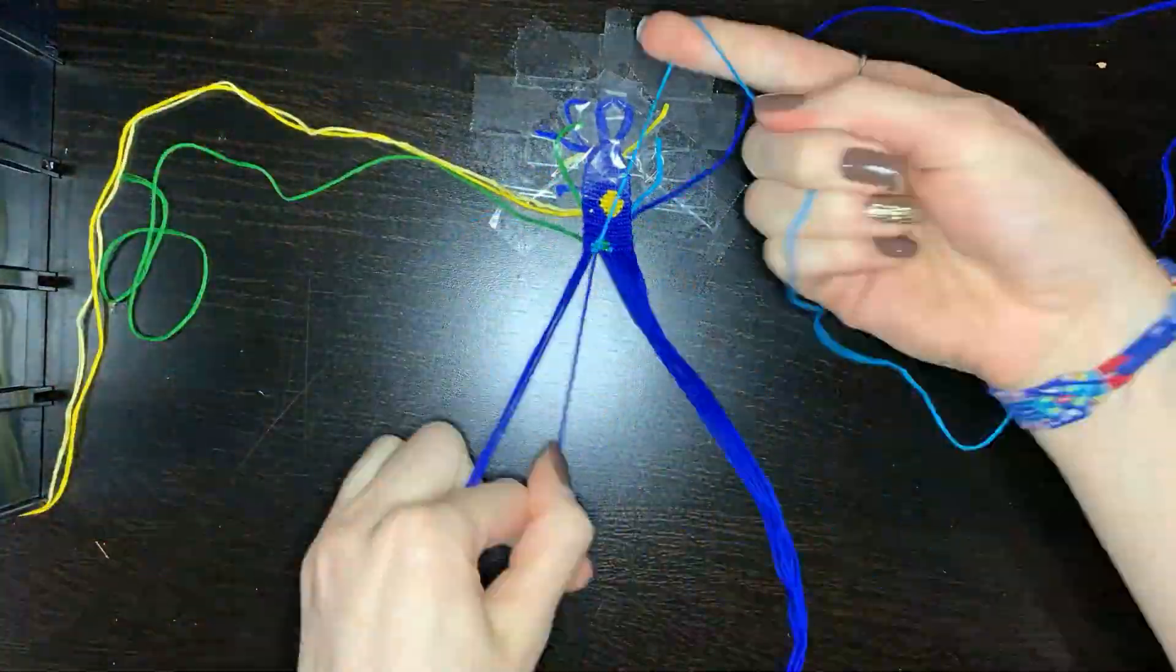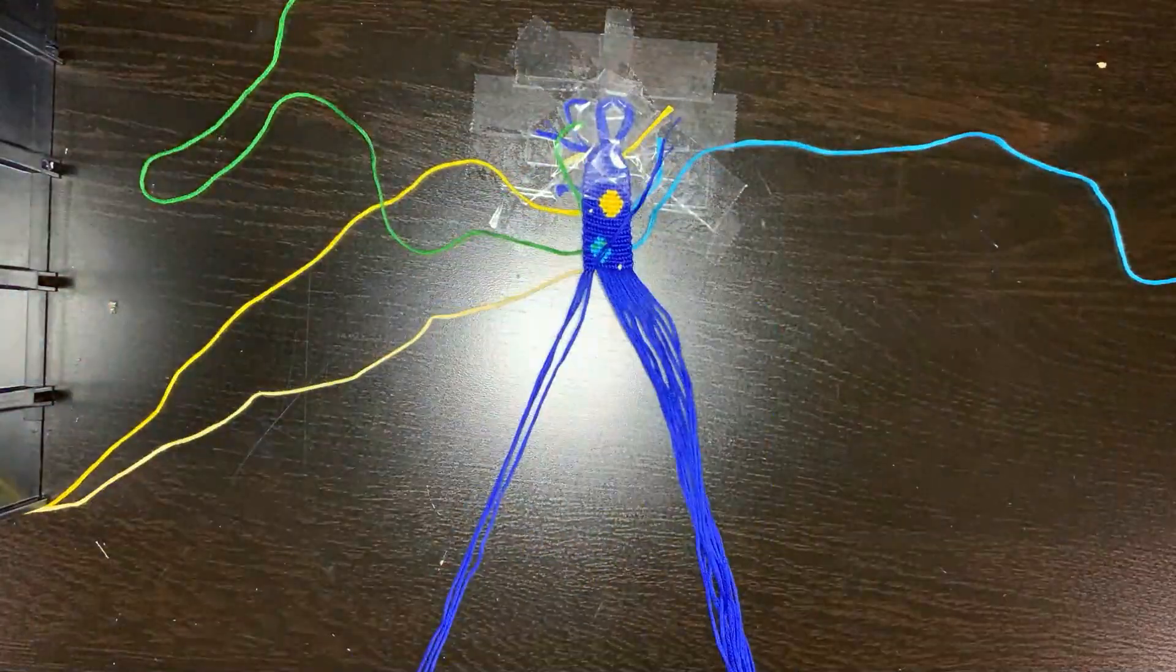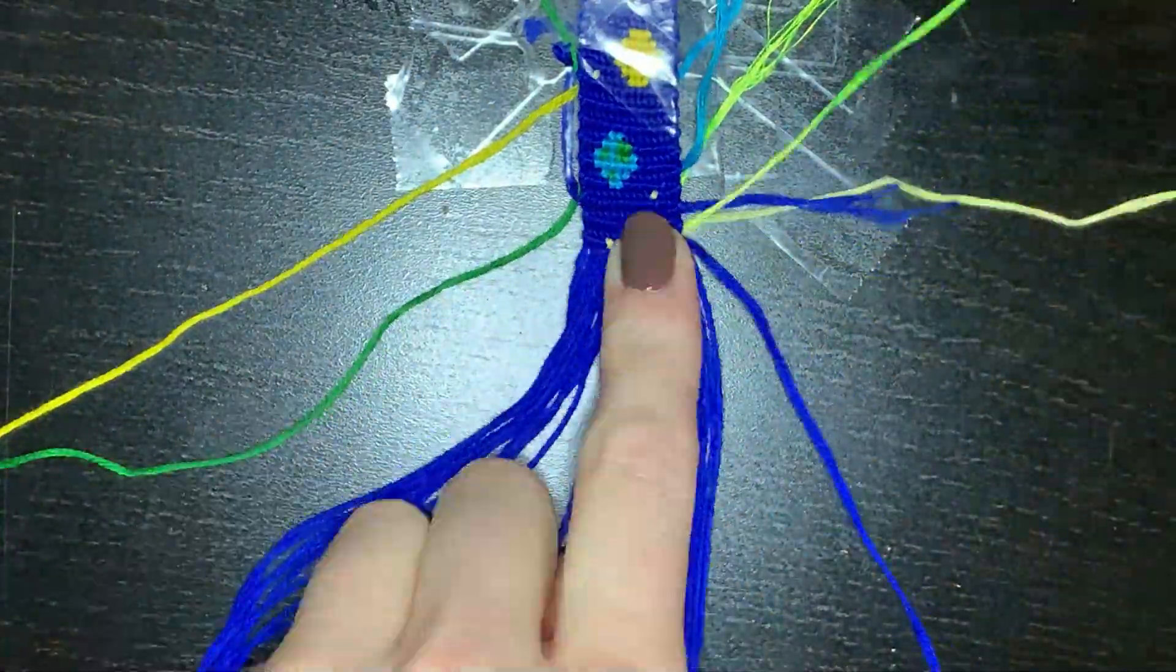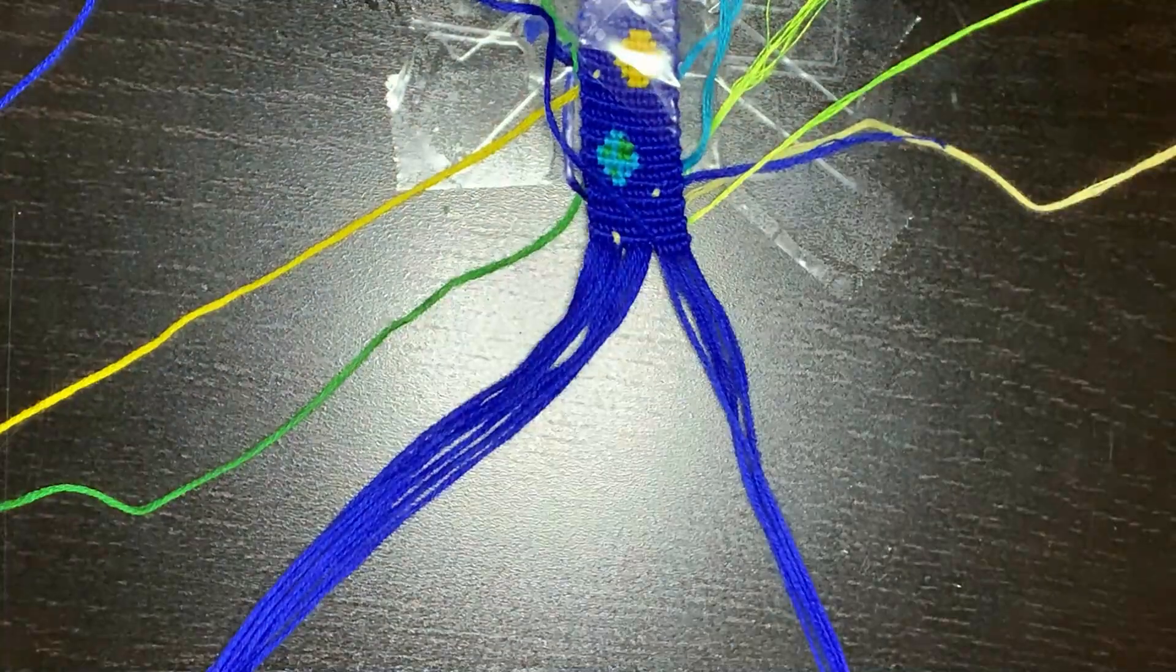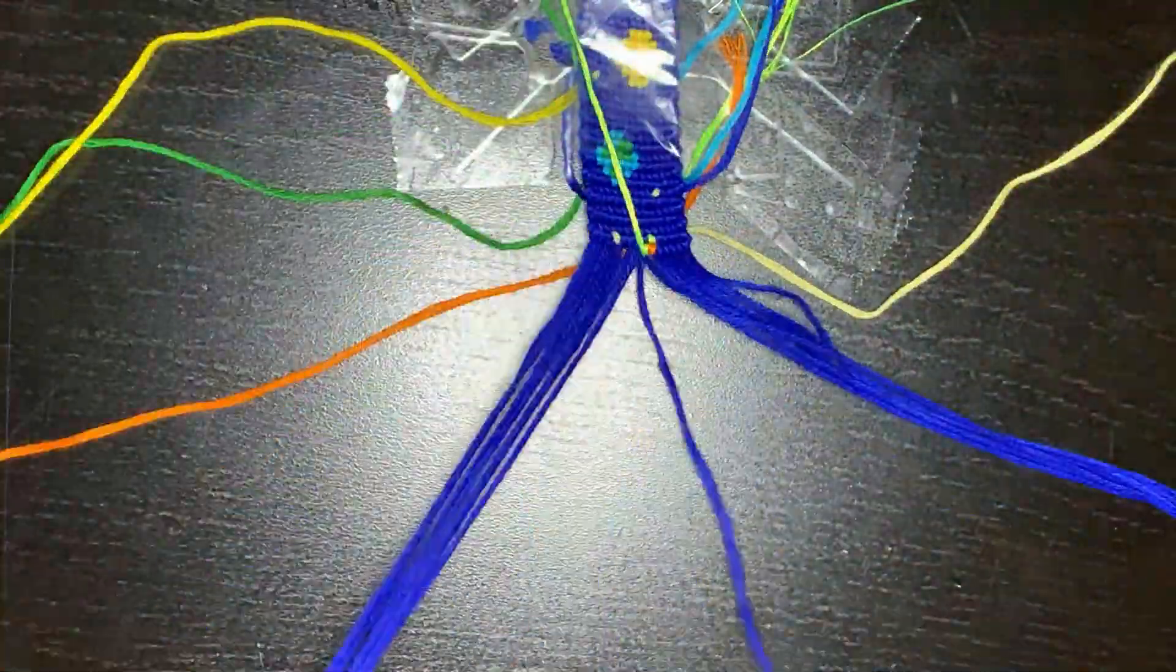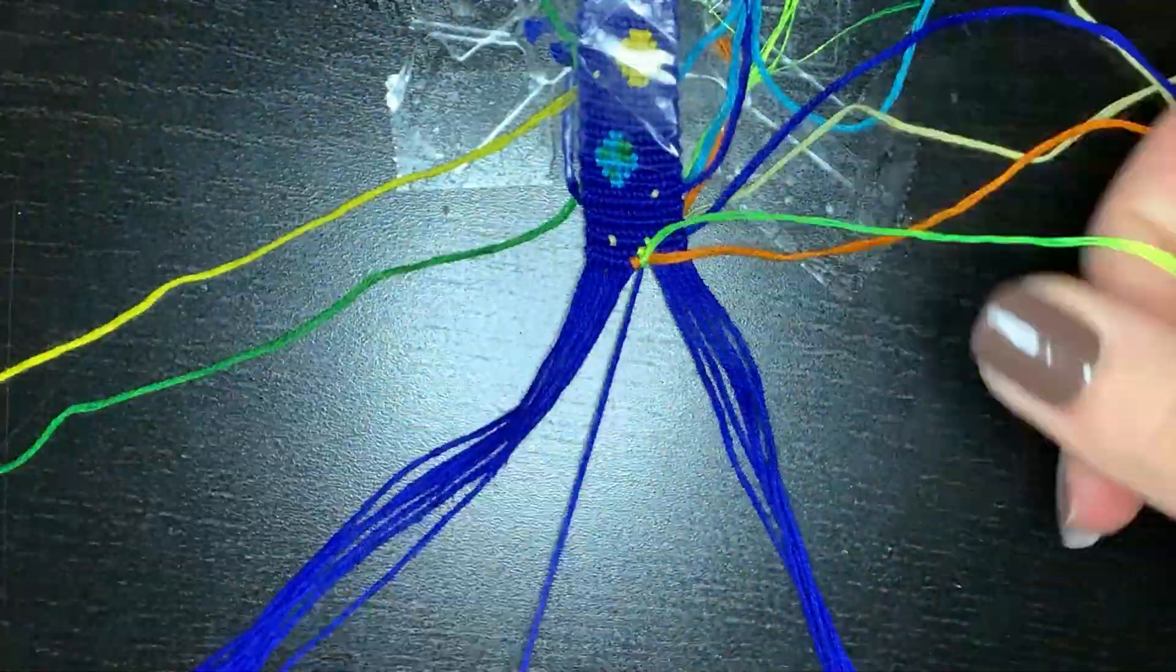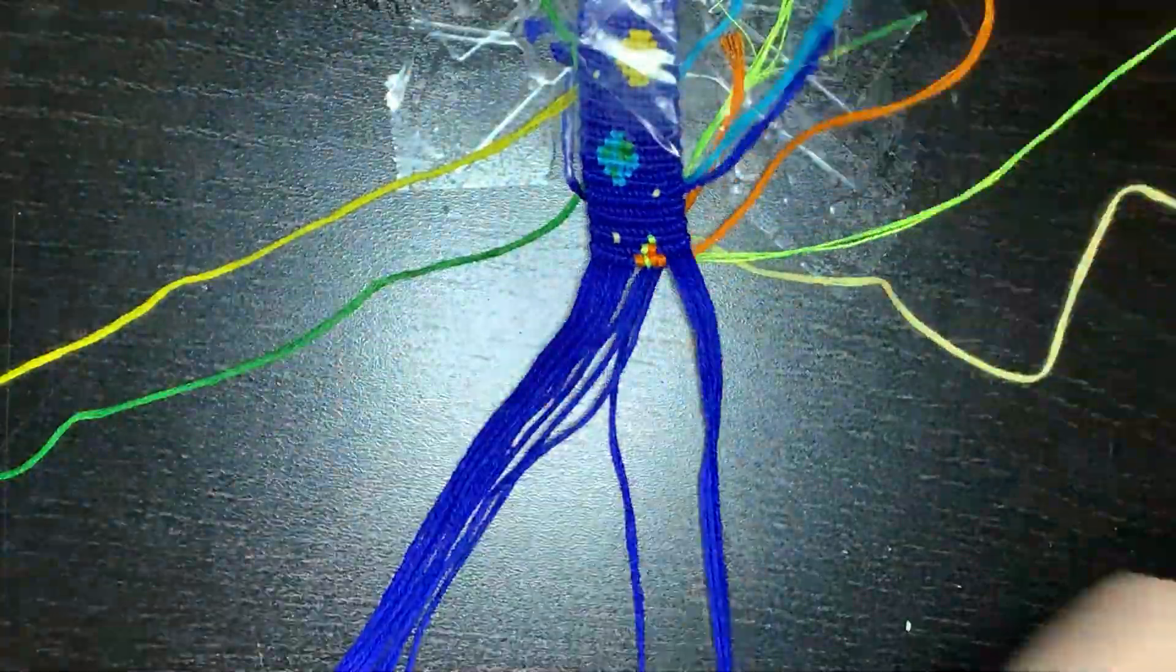This went off pretty much without a hitch. I used my Loops and Threads string for this as well as a touch of DMC which we'll see coming up in the next planet. I used it for the rings—it's this fluorescent green color that looks almost the same as pale yellow. The fluorescent green is actually much thicker than the normal string so I had to split it down to three threads out of the six or seven.